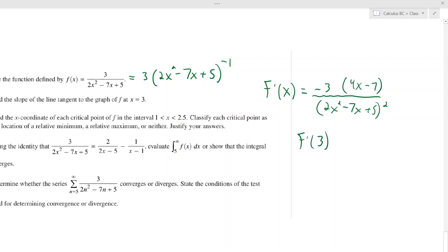So f prime of three, which is what they want, slope of the tangent line at three, is just negative three times, 12 minus seven is five, over what's that? Nine, 18 minus 21 is that, negative three plus five, that's two squared is four. Does that sound good? Negative 15 fourths. That's part a.